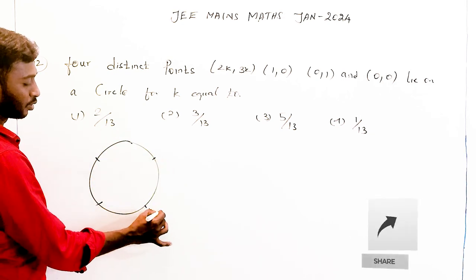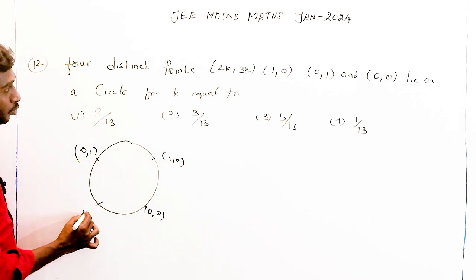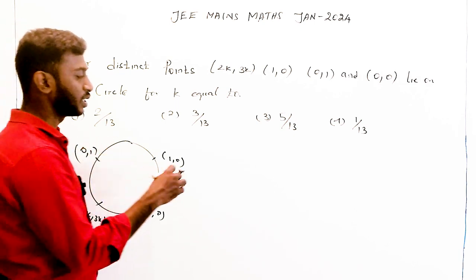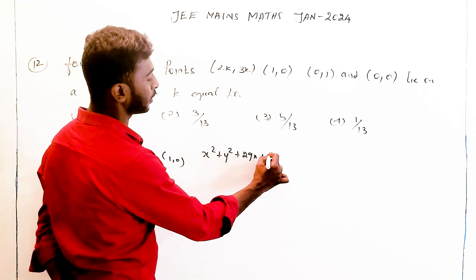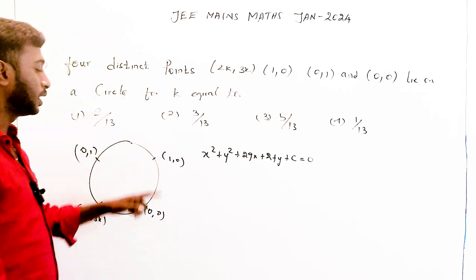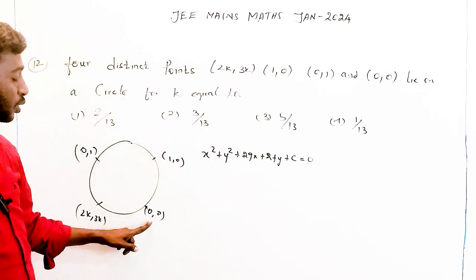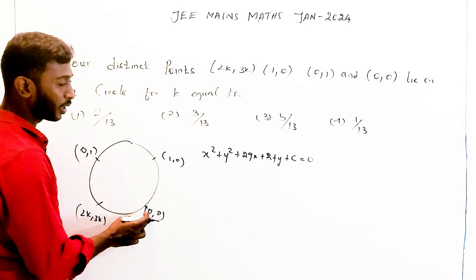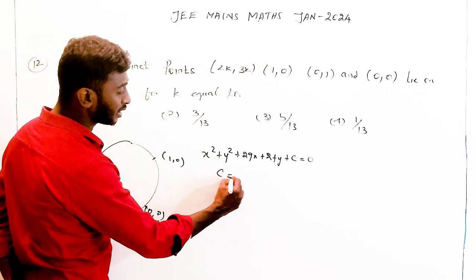The four points are: (0, 0), (1, 0), (0, 1), and (2k, 3k). These 4 points lie on a circle. We know the general equation of a circle is x² + y² + 2gx + 2fy + c = 0. We are going to substitute the values of x and y. First, I will substitute the point (0, 0).